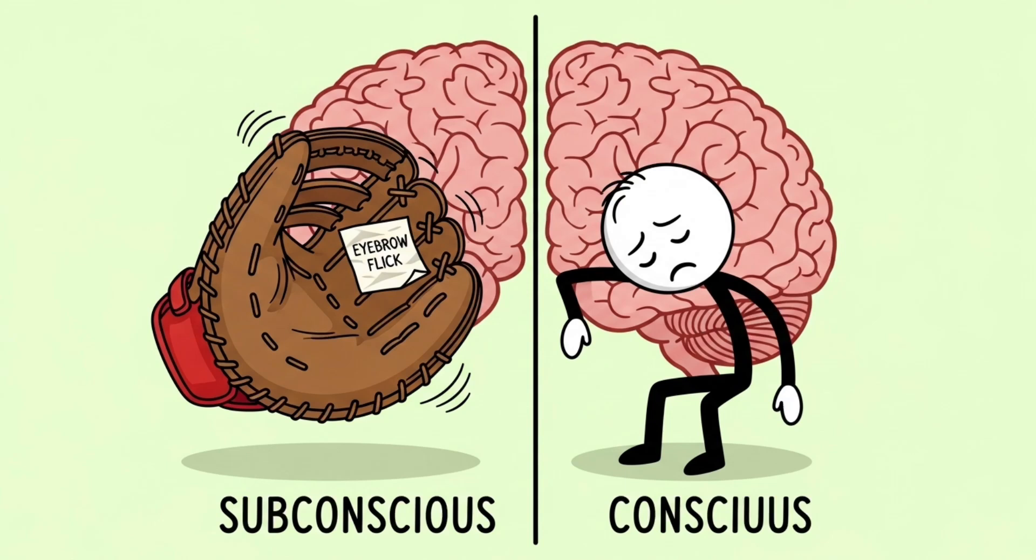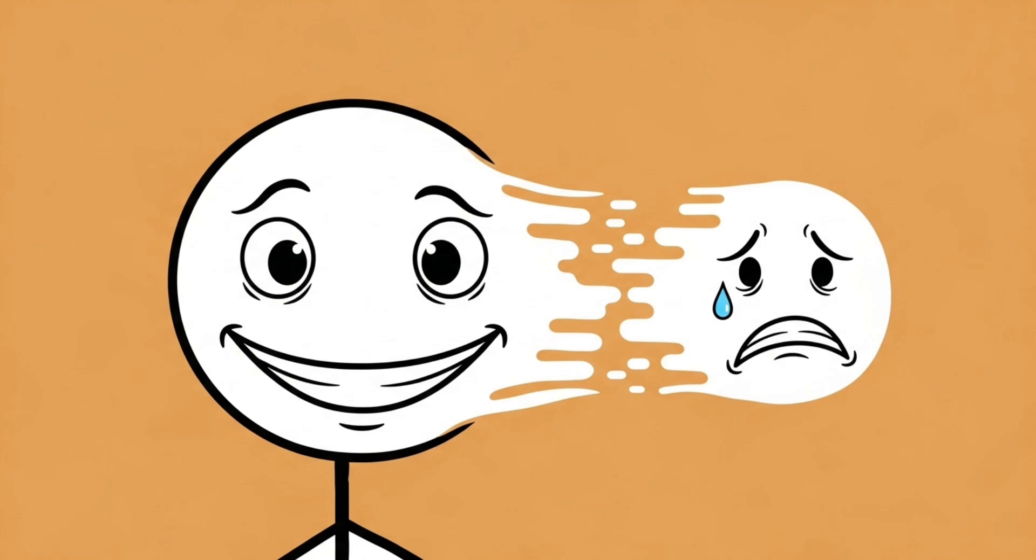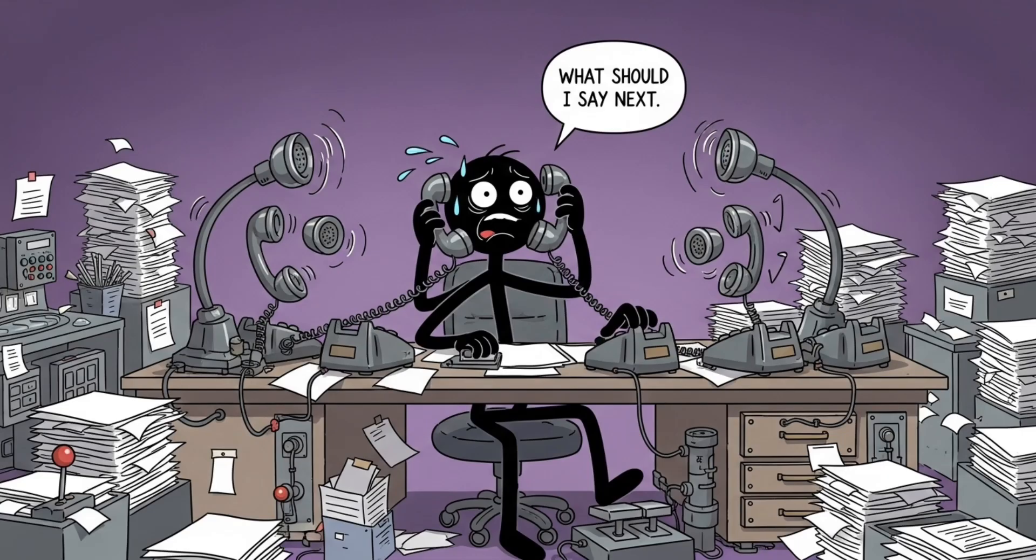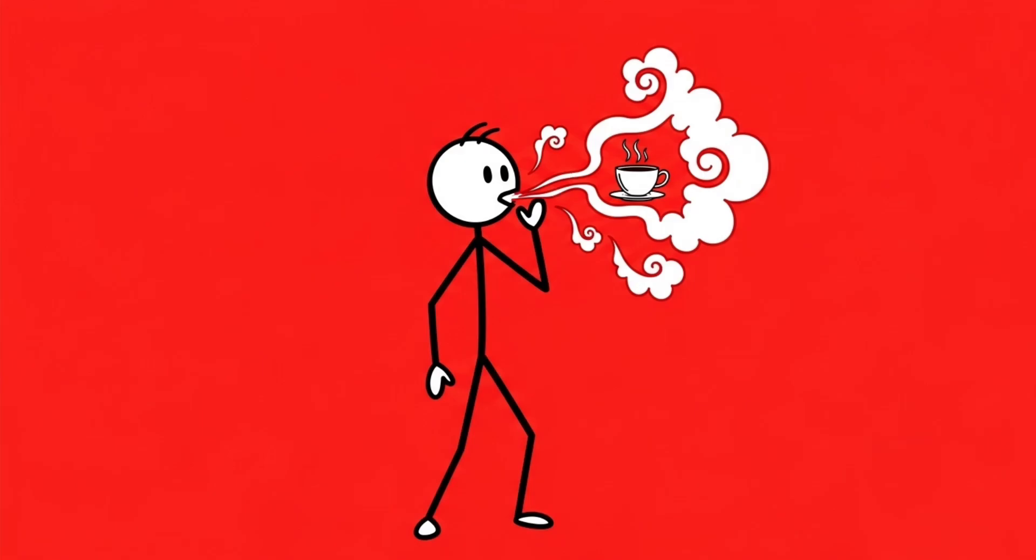Well, here's the thing. Your brain can actually catch that same eyebrow flick, it's just too lazy to forward the memo. Micro-expressions are these split-second emotional slips that leak out before someone can fake a smile or pretend they're not nervous. Your subconscious sees it, it logs it, but your conscious brain is too busy thinking about what to say next or whether your breath smells like the coffee you chugged earlier.